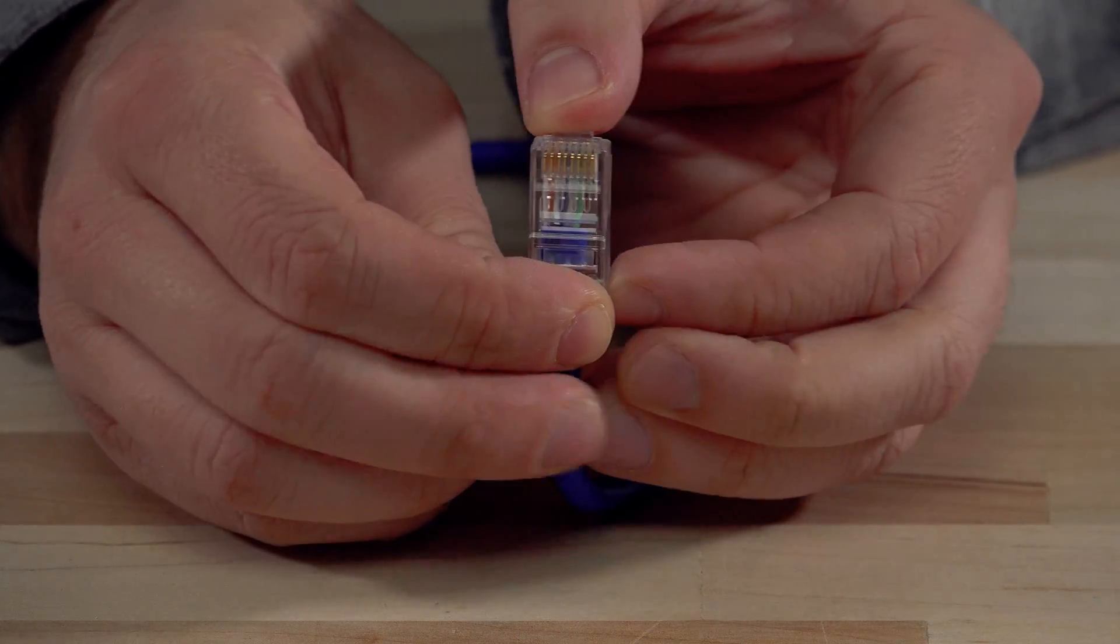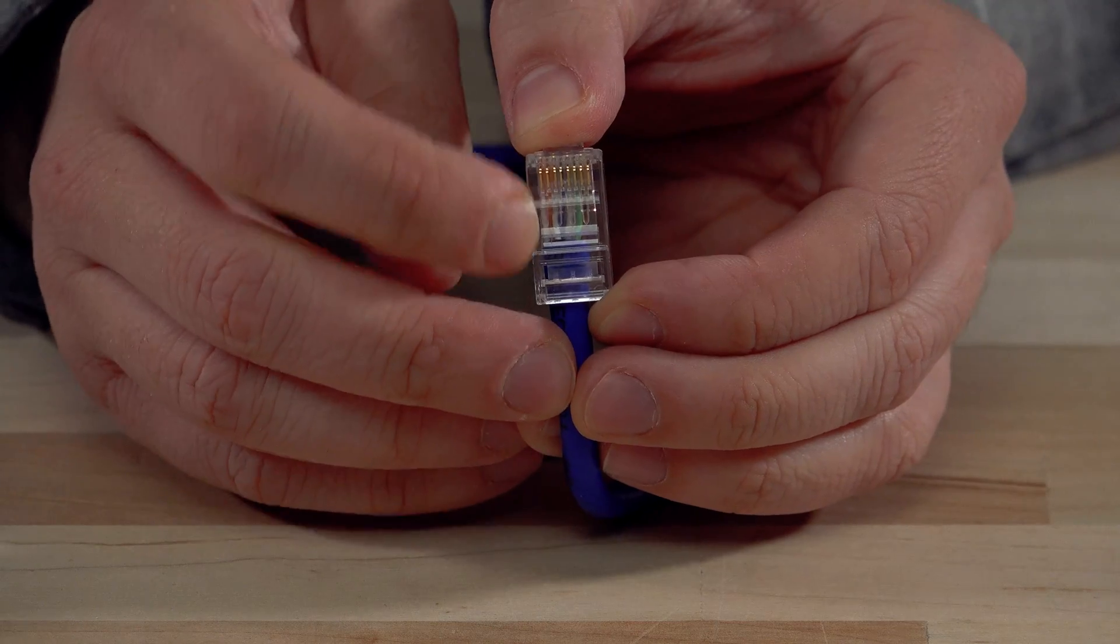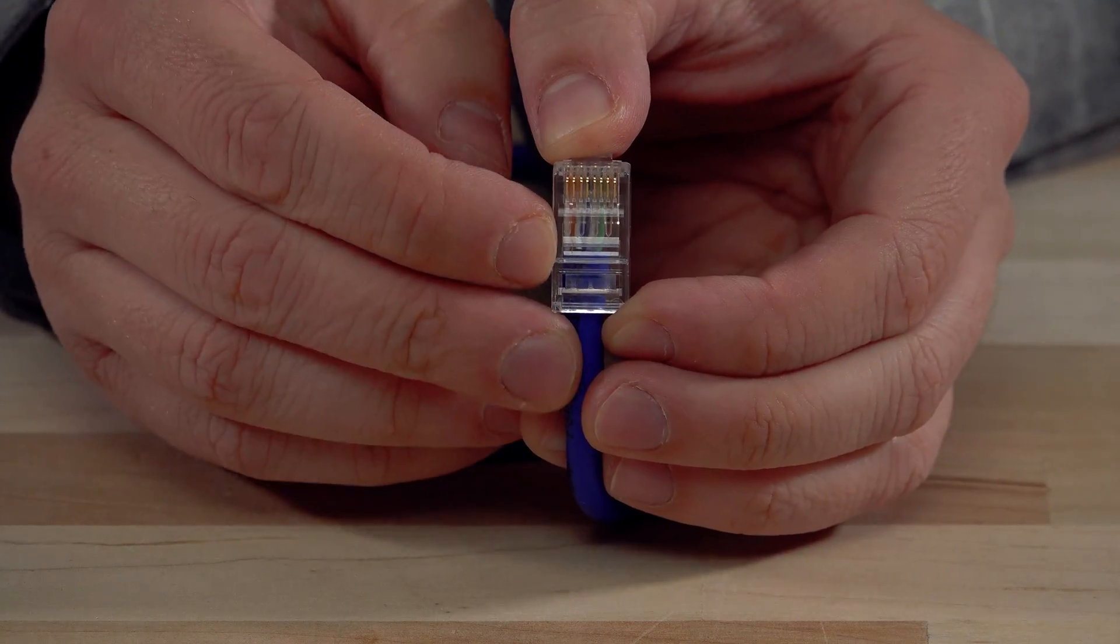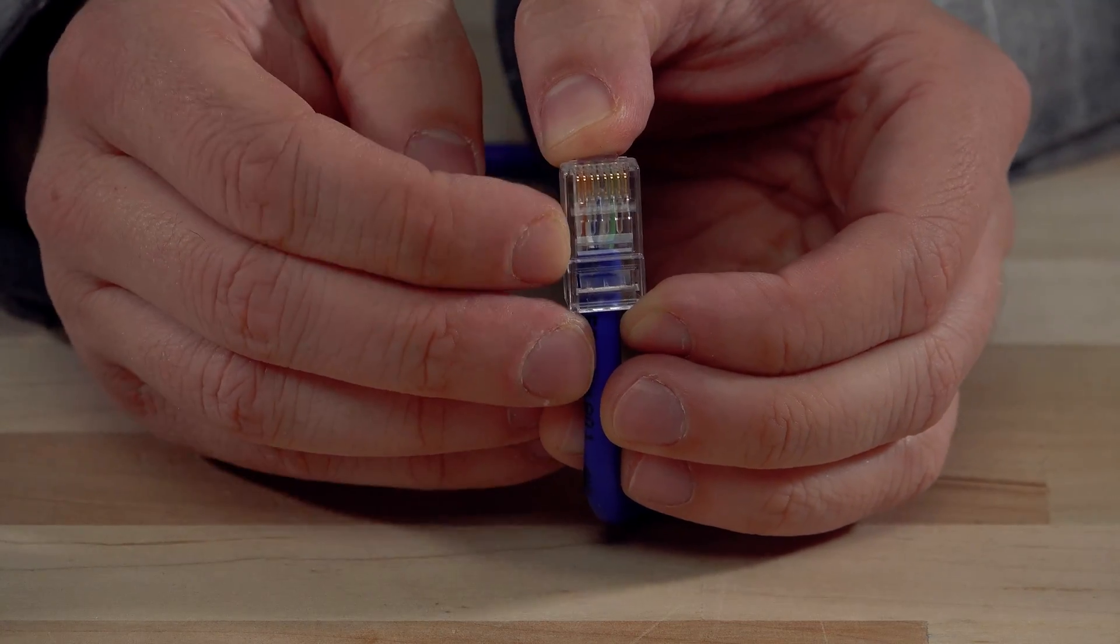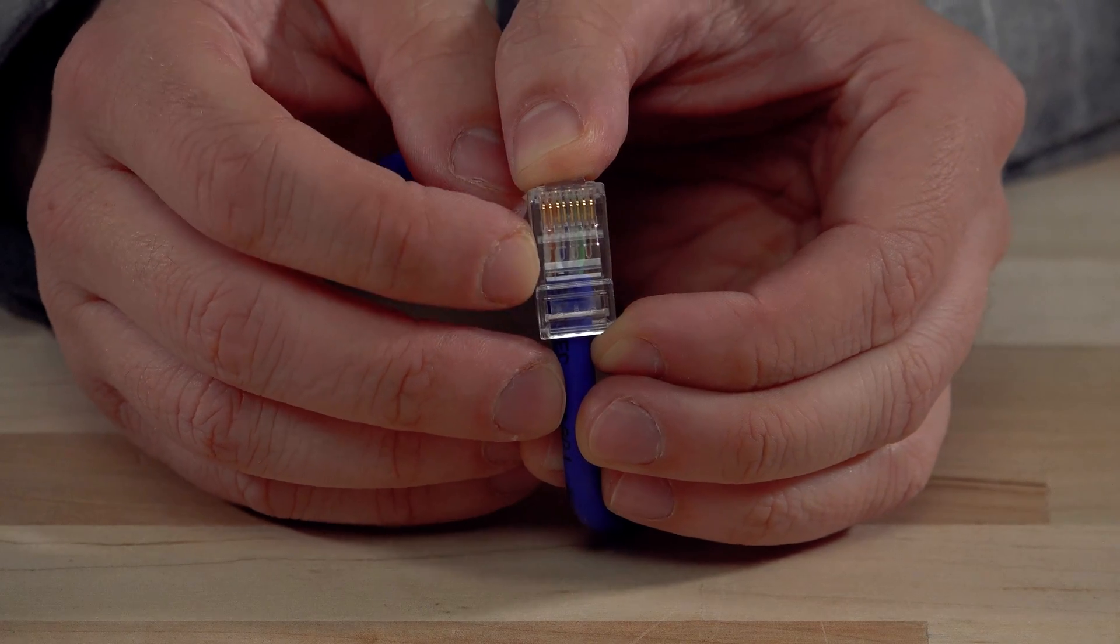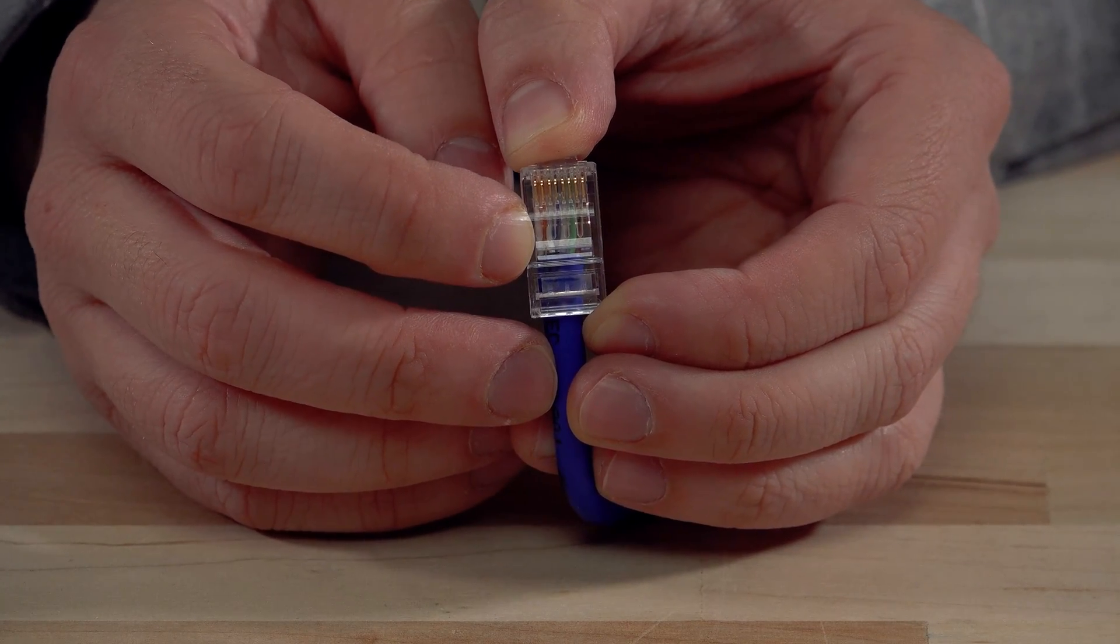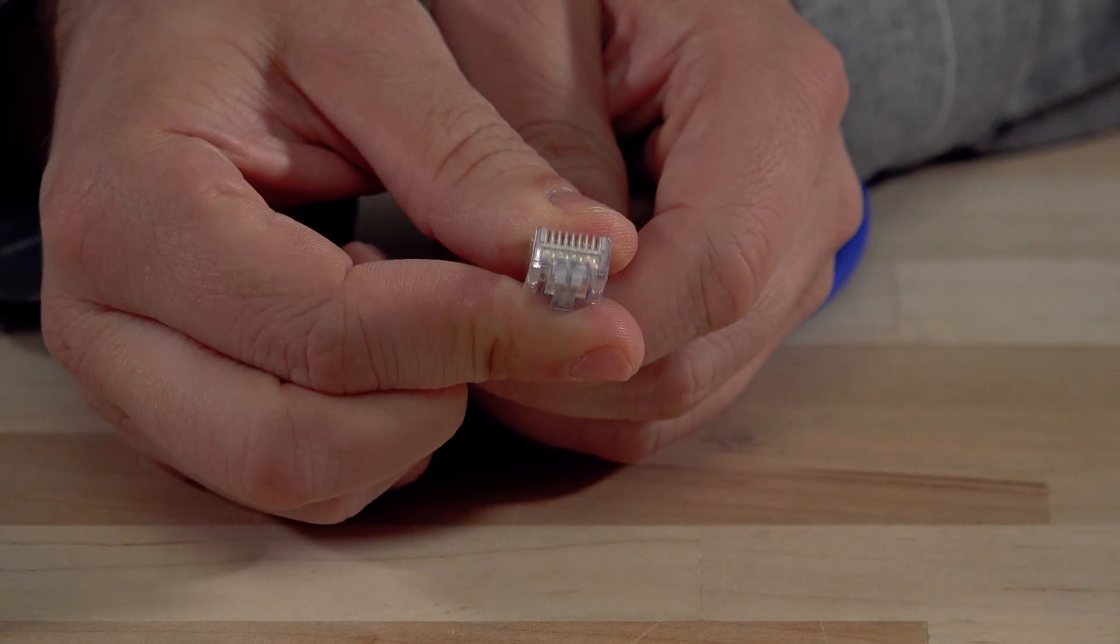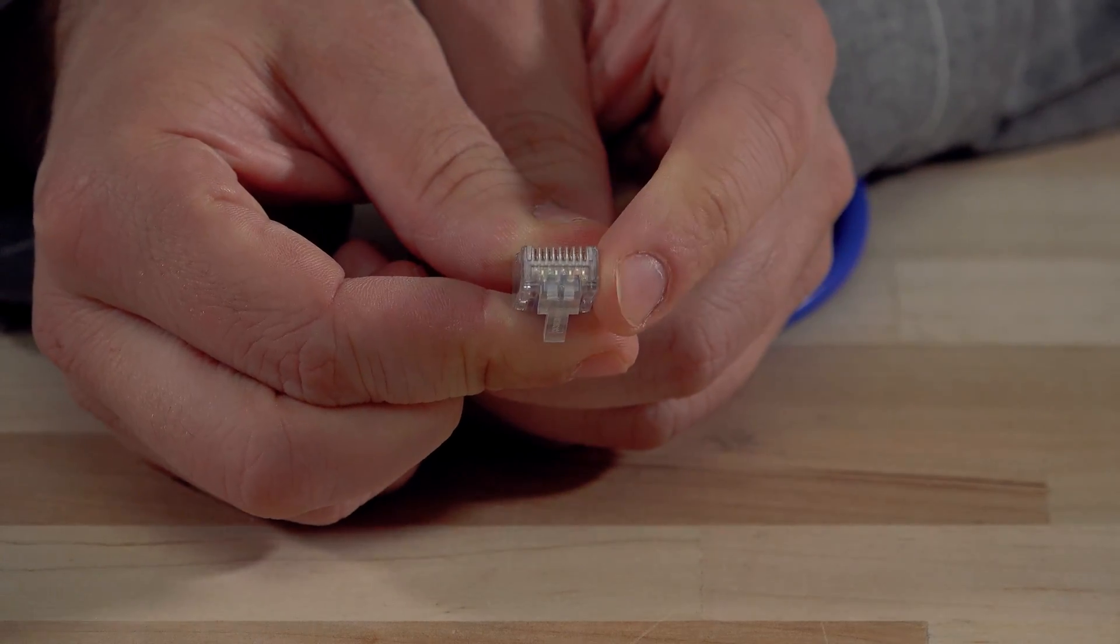So the first way we can identify wiring in your network is looking at your patch cables. Looking at the top-down version, if the orange wires are on the left-hand side, that's 568B, and if the green wires are on the left side, that's 568A. You can also look at the front of the connector to see which wires are in which position.